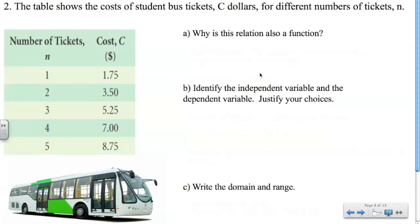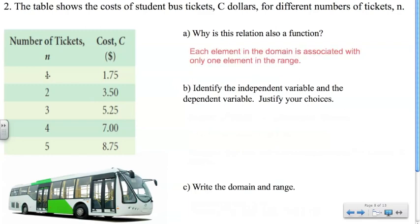Question A: why is this relation also a function? It's a function because each element in the domain is only associated with one element in the range. We can see that one ticket costs $1.75, two tickets cost $3.50, and so on and so forth.